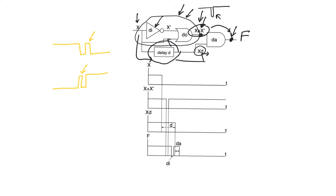Like static hazards, dynamic hazards are always triggered by a transition in one of the input signals. In this case, we have only X as an input signal, because we are isolating a path that could have a dynamic hazard, and X is making a transition from 1 to 0. Because X is eventually going to feed an AND gate, that AND gate is going to observe the same transition as X, and so eventually F is going to take the same value as X.